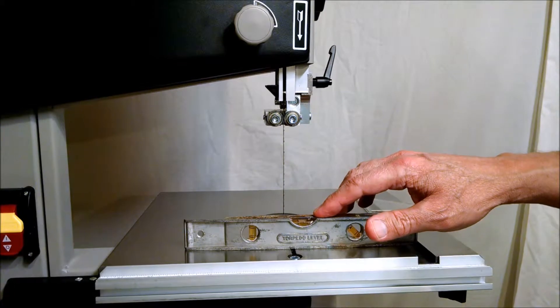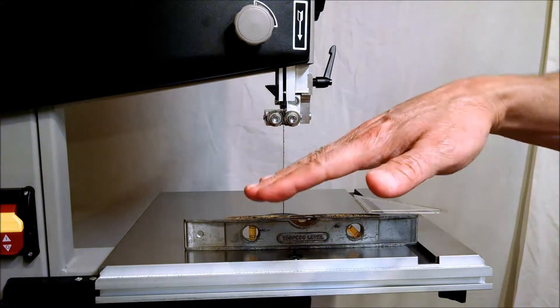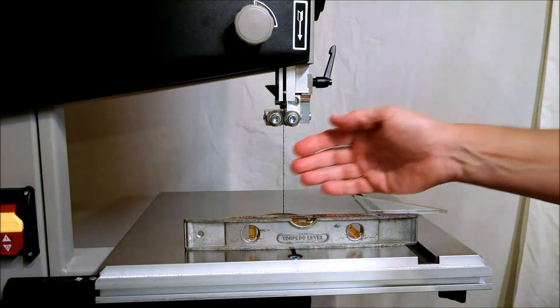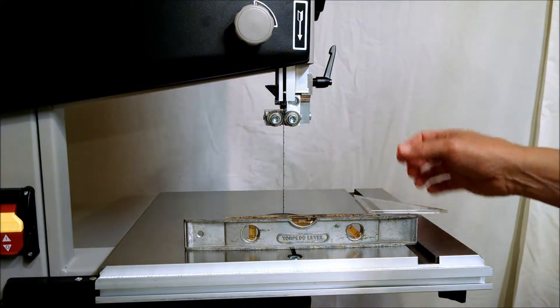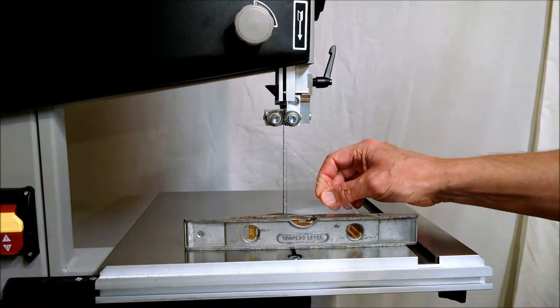Second, make sure your bandsaw table is level. The table is only adjustable in this direction, which is why the tool stand must be level both ways. Finally, make sure that the blade is under tension, then check to see if it's perpendicular to the table. It's probably not, and that's why I made this video.